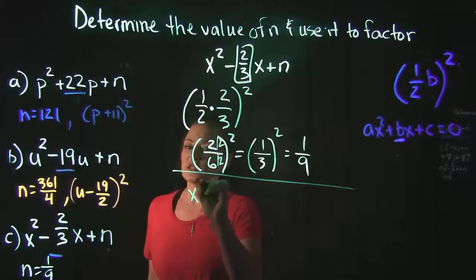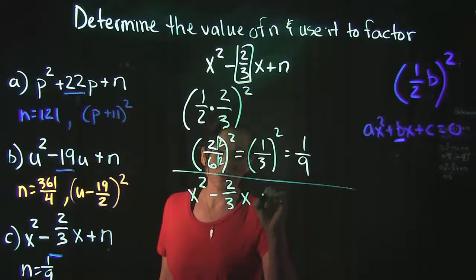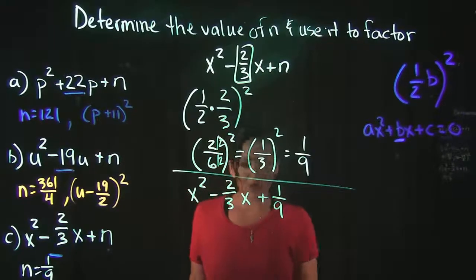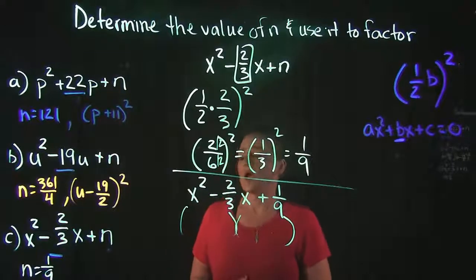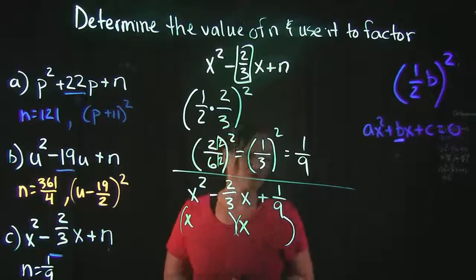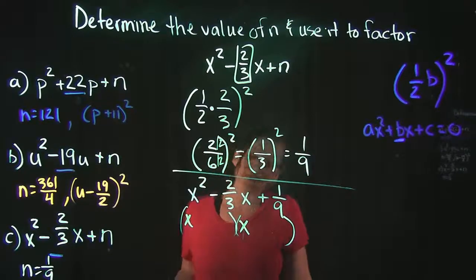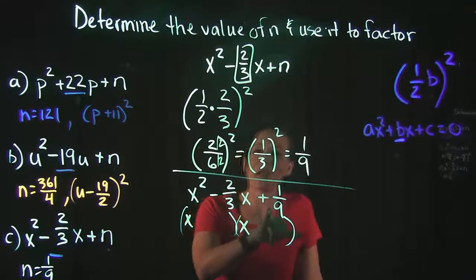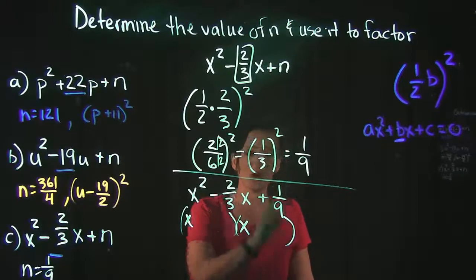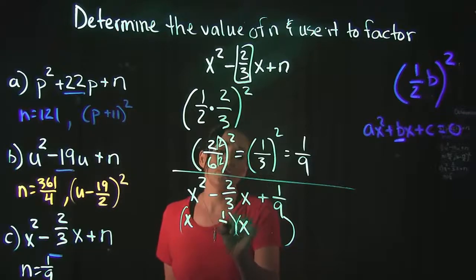Now if you plug that in into our trinomial here, because we need to factor this, this is what we get. So then we're going to factor this, and because it's a perfect square problem here, we know that both these factors are going to be the same. So x squared tells us x times x, and we need to keep in mind for our last positions here, what did we use to get that one ninth? What times what was one ninth? Well, we did one third times one third, so one third is going to be our magic number that works over here.